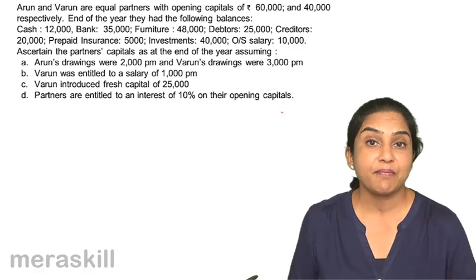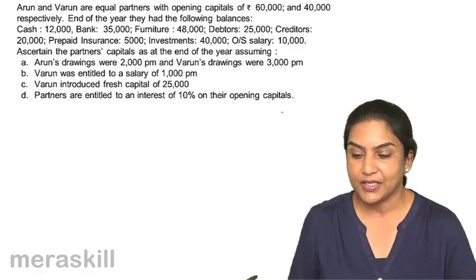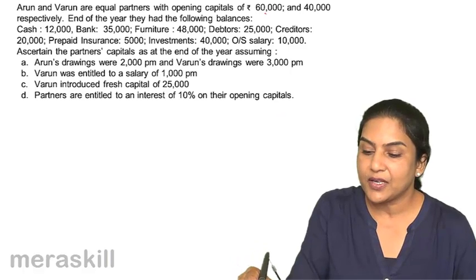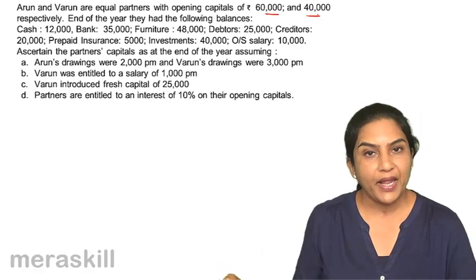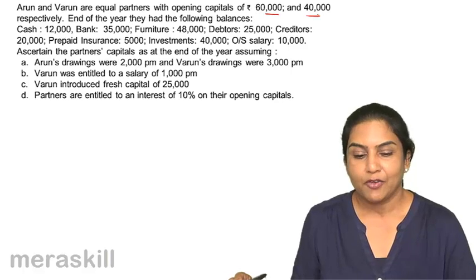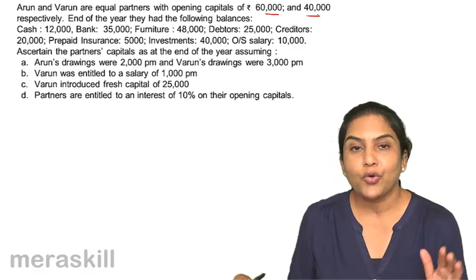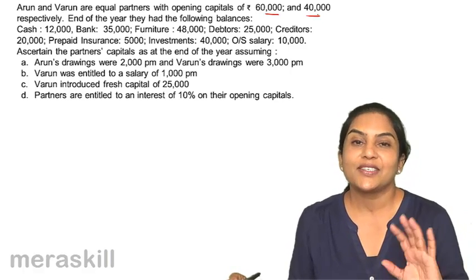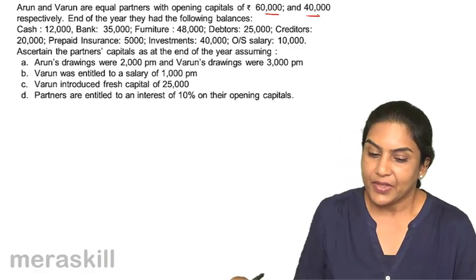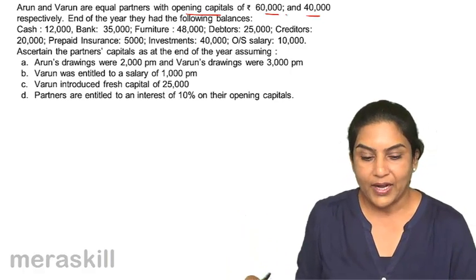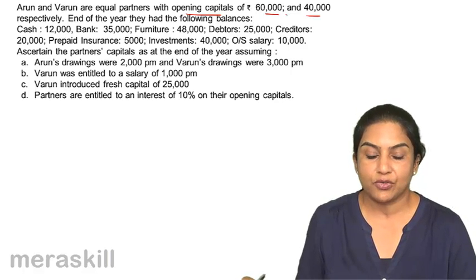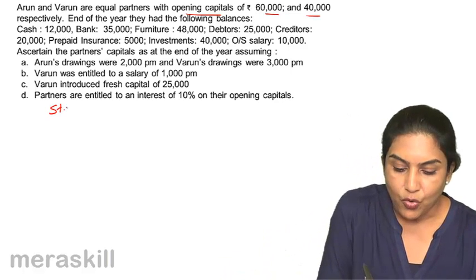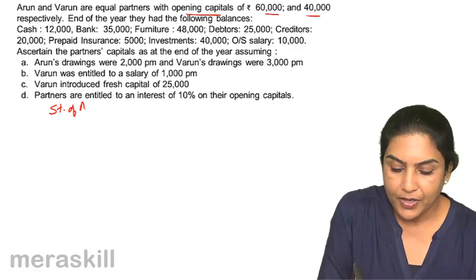Now, we have more or less the same set of assets and liabilities. Arun and Varun were equal partners; the capitals were 60 and 40, so the opening capital was 1 lakh. The example is just the same as before, only now it is for 2 partners with the same set of assets and liabilities. We have an opening capital of 1 lakh, but we don't know the closing capital. So we will prepare the statement of affairs to find out what is the closing capital.